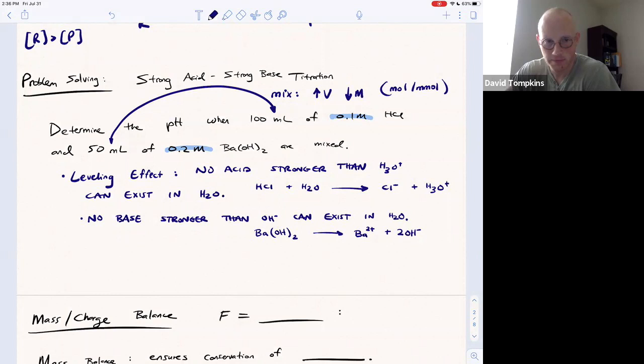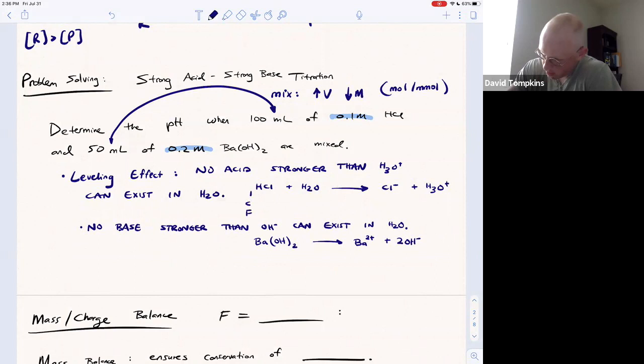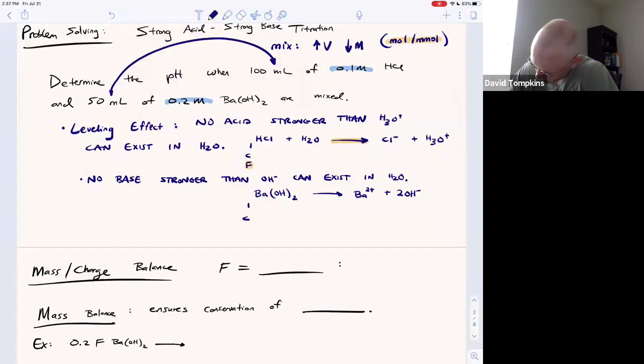Moles and millimoles will not lie upon volume change. So what I'm going to do is set up an ICF table. Whenever you have ICF from these one-way arrows - initial, change, final, not initial, change, equilibrium - you should work in moles or millimoles. So setting up the reaction and then determining the appropriate table are the first two key steps in correctly solving any acid-base problem. Associate this one-way arrow with ICF not ICE, and then moles or millimoles.